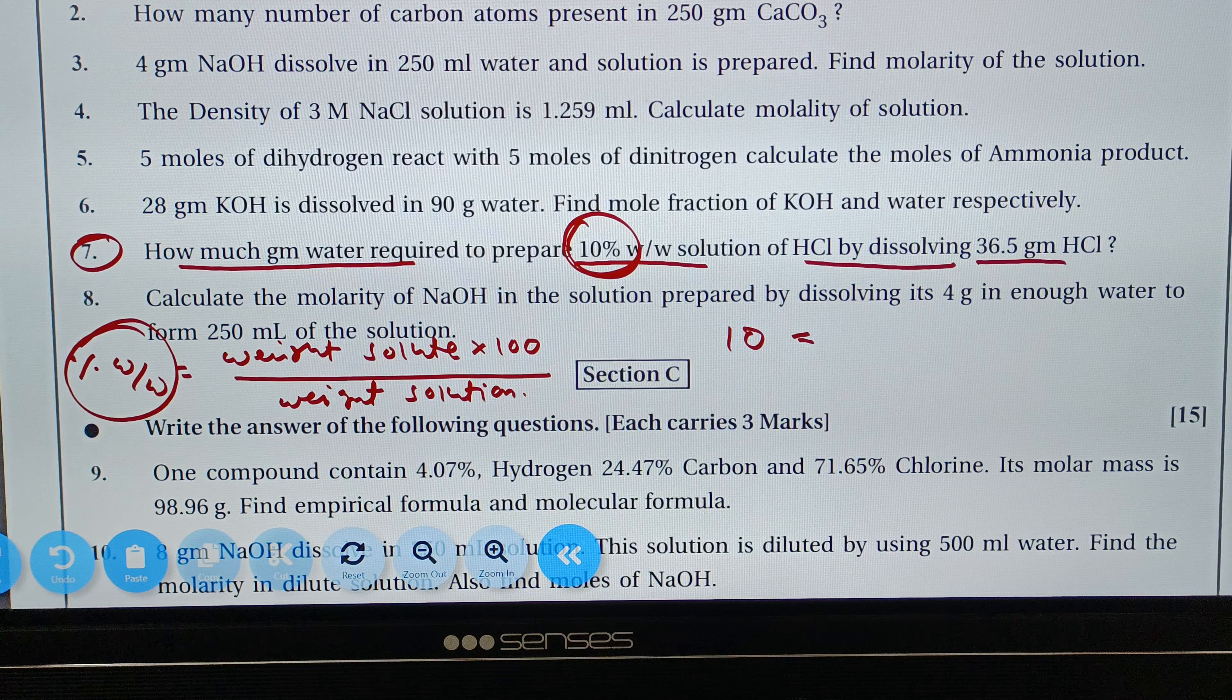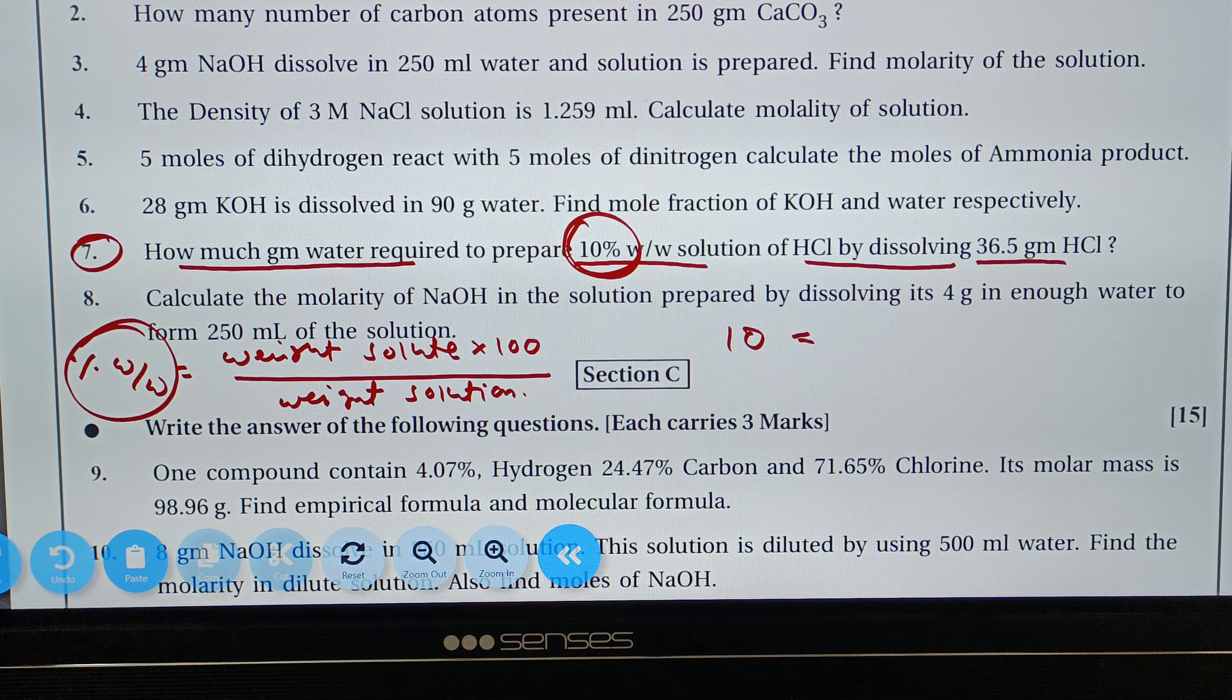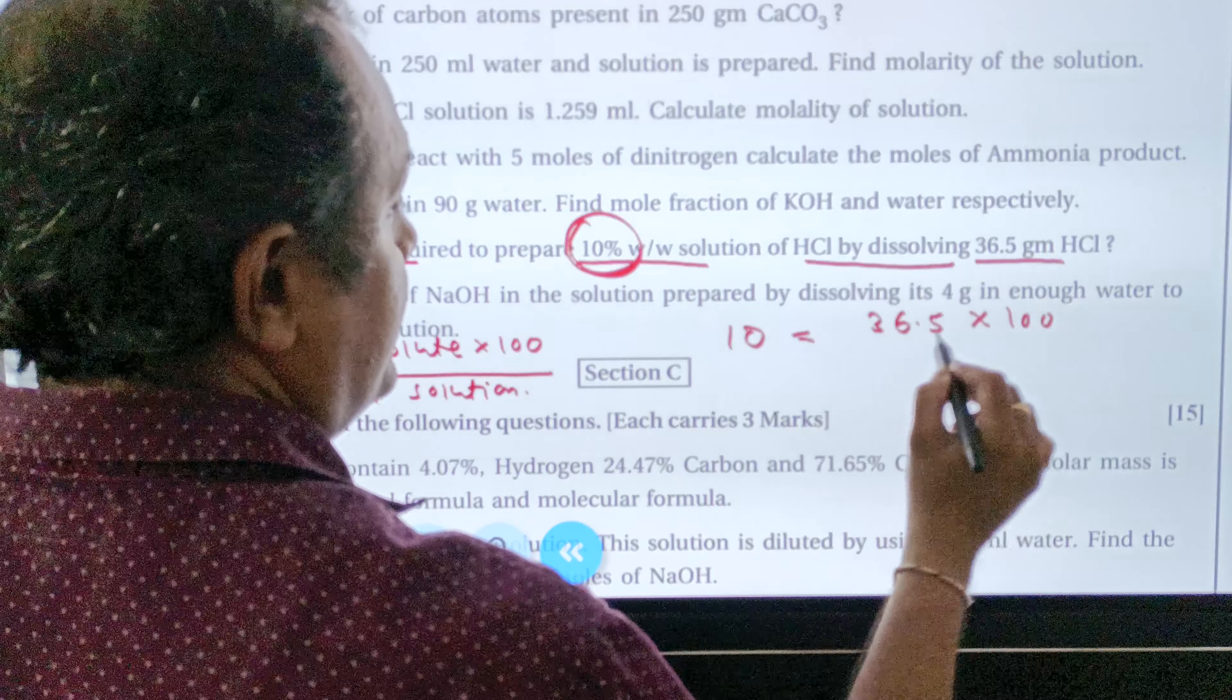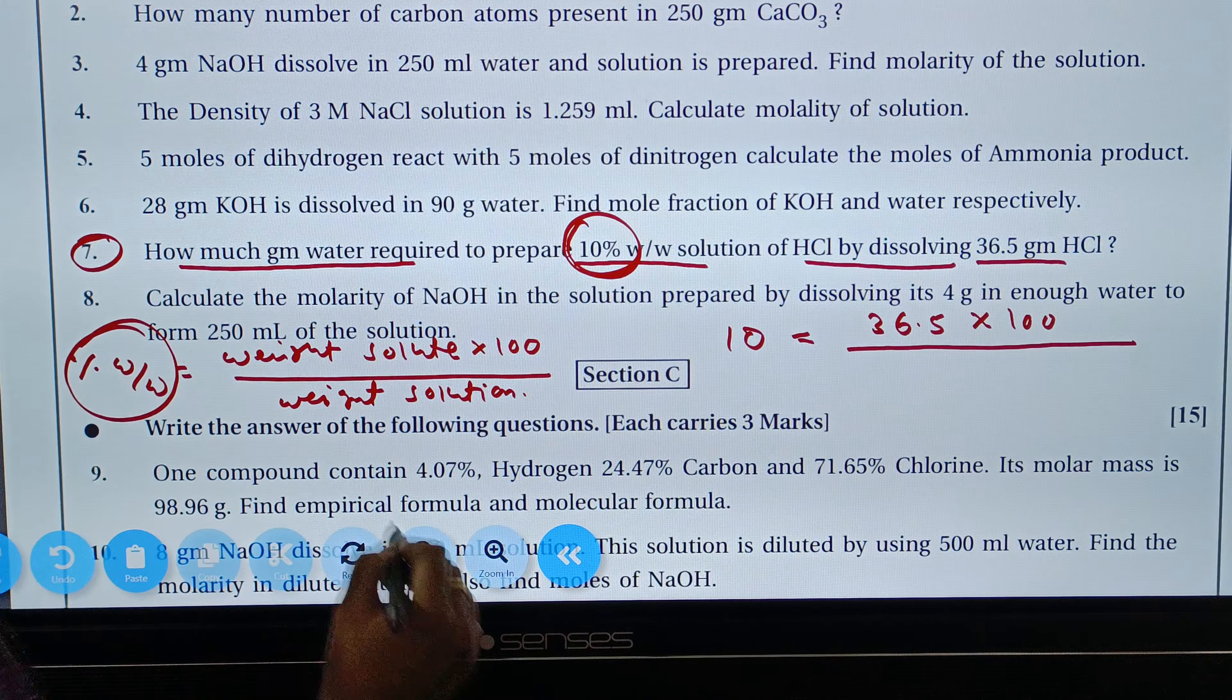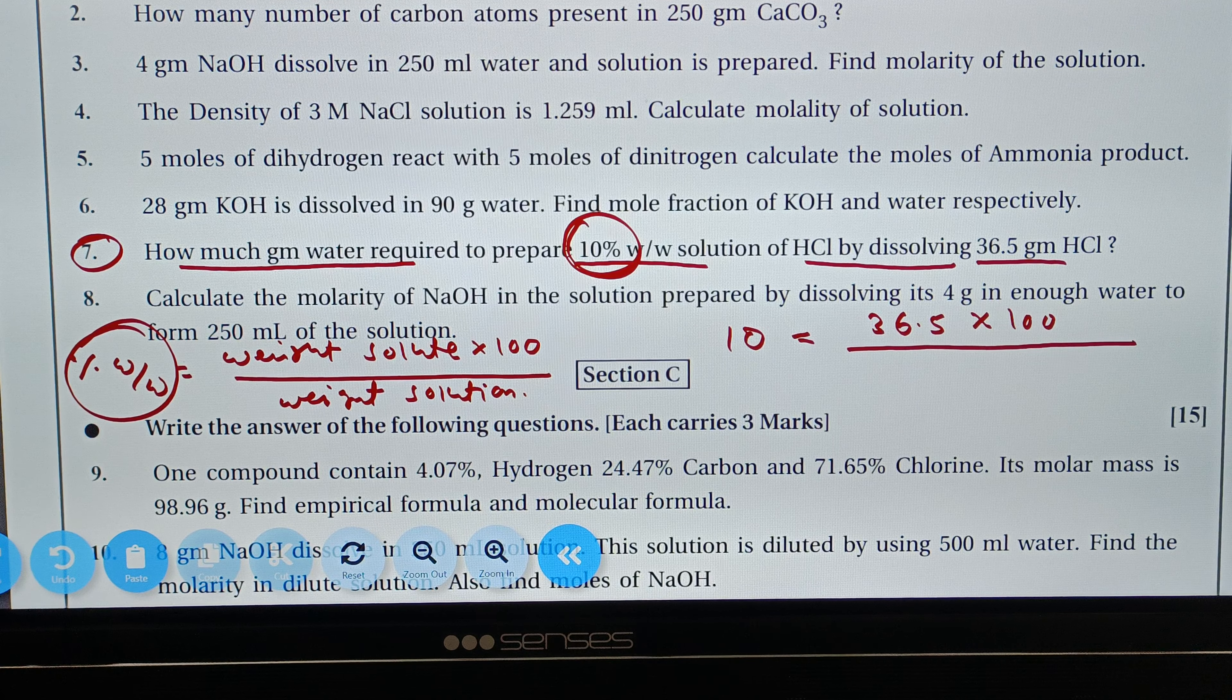Weight of solute: 36.5 times 100 divided by weight of solution. Then we have solute plus solvent.